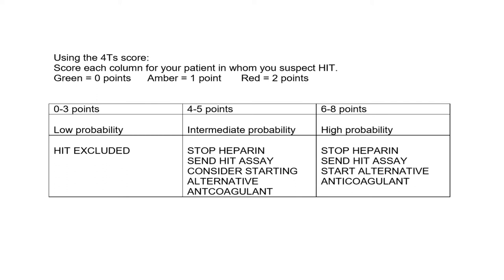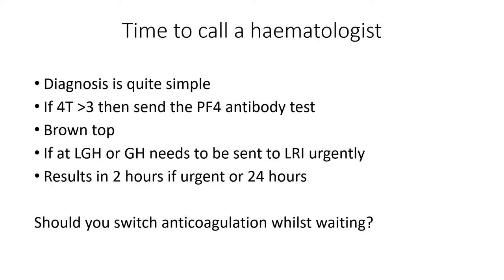The advice when you reach a high score is to stop the heparin immediately, send the assay, and start something else. To send the assay, you need to speak to a haematologist. Diagnosis is fairly simple once you've done your 4T score — if it's over three, send the antibody test to platelet factor 4-heparin complexes. You need to send a brown top; if you're at the General or the Glenfield, it needs to be couriered to the Royal Infirmary where the specialist haematology lab is. Results can be returned in two hours if it's an emergency, or within 24 hours for less urgent cases.